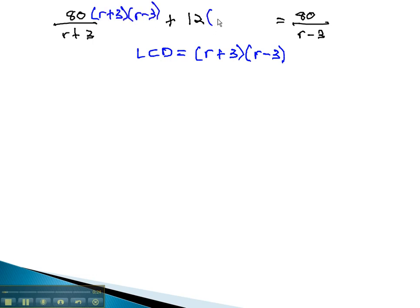So we will multiply each term by this product, r plus 3, r minus 3. As we do, the r plus 3's will divide out, giving us 80 times r minus 3, plus 12 times...